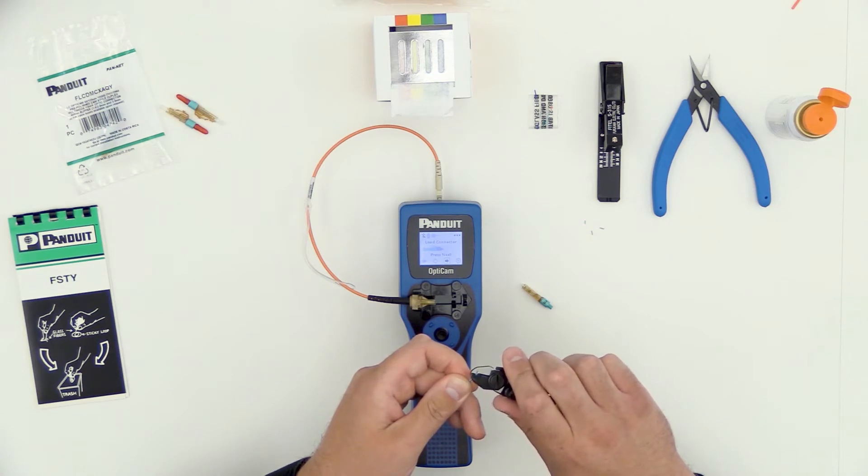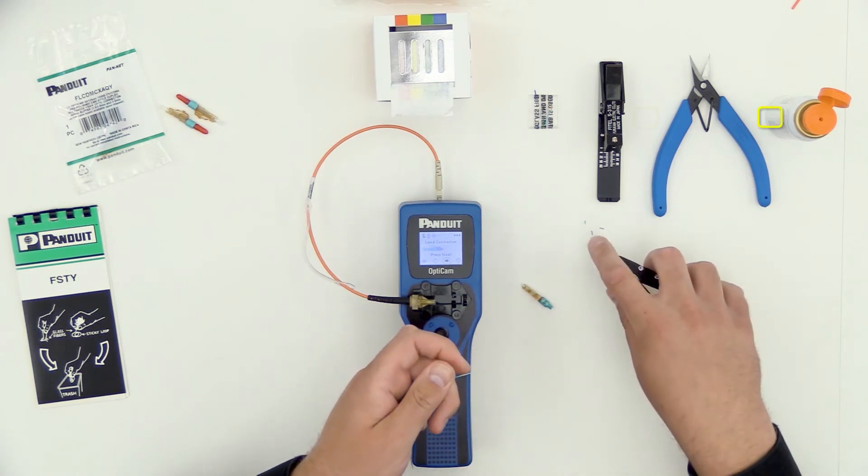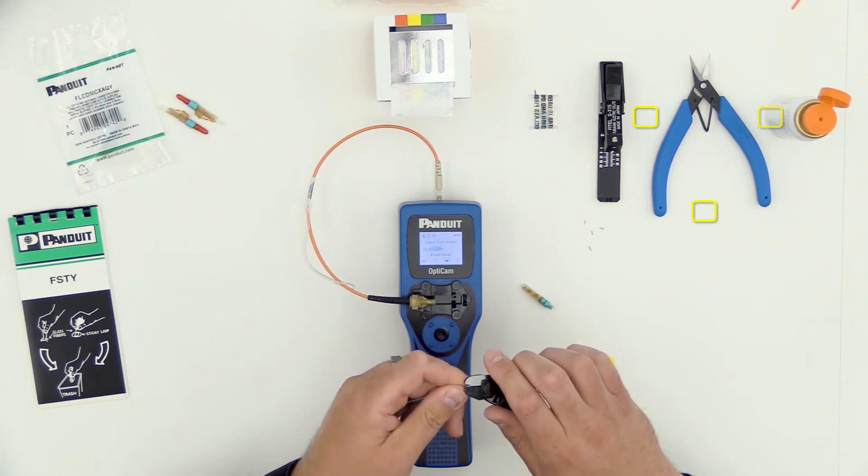Continuing to do short pulls, I want to strip off about 30 millimeters of the buffer.